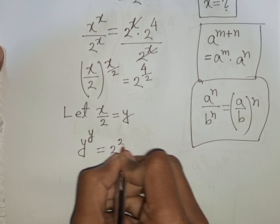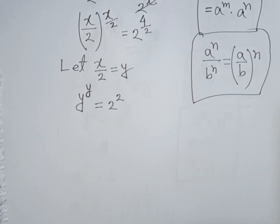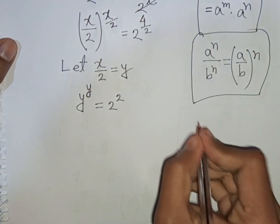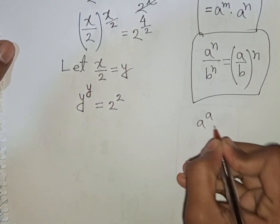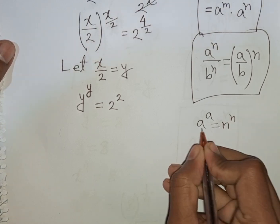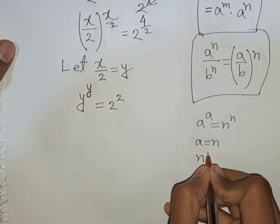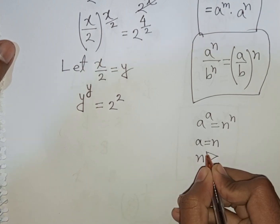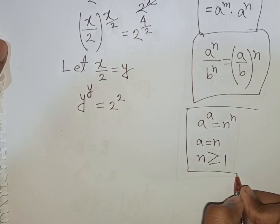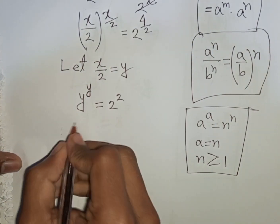That means it will be 2 power 2. Here I can apply the rule that a power a is equal to n power n, so a will be equal to n where n is greater than or equal to 1. I can compare here: y will be equal to 2.